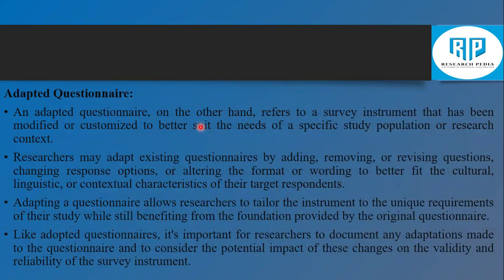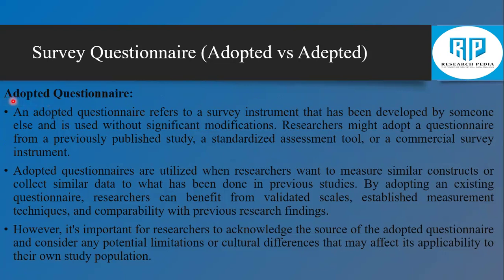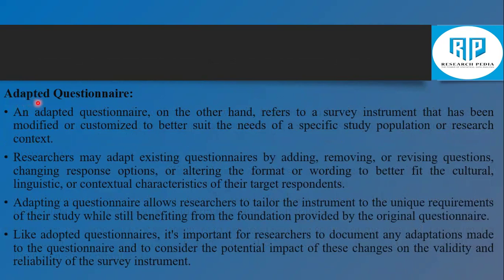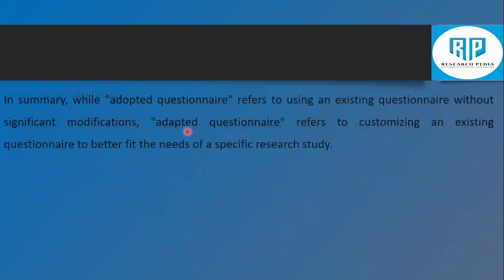An adapted questionnaire (A-D-A-P-T-E-D) means you have made significant modifications — you change most parts of the questionnaire as per your requirement. In summary, adopted means using someone else's questionnaire without significant modification, while adapted means you change major parts of that questionnaire for the requirements of your study.